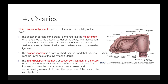There are three prominent ligaments that determine the anatomic mobility of the ovary. First is the mesovarium, which attaches to the anterior border of the ovary and contains the arterial anastomotic branches of the ovarian and uterine arteries, a plexus of veins, and the lateral end of the ovarian ligament. Next is the ovarian ligament — a narrow, short, fibrous band that extends from the lower pole of the ovary to the uterus. The third is the infundibulopelvic ligament, or suspensory ligament of the ovary, which forms the superior and lateral aspect of the broad ligament and contains the ovarian artery, ovarian veins, and accompanying nerves. It attaches the upper pole of the ovary to the lateral pelvic wall.